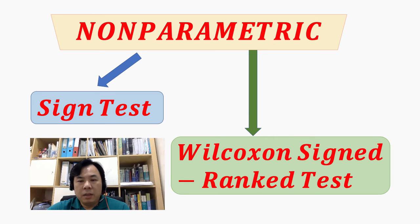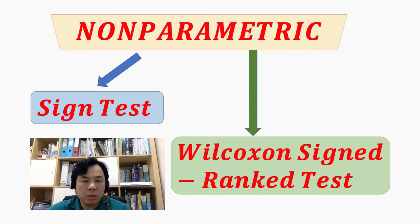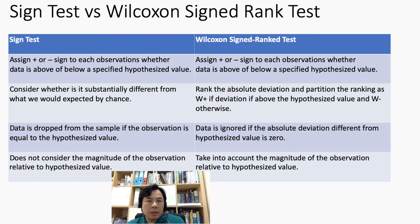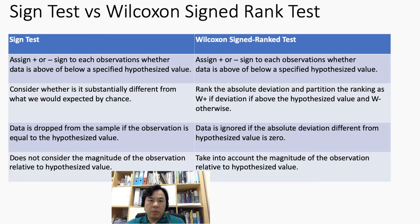Let's look at the procedures for both the sign test and the Wilcoxon signed rank test, and briefly show the differences between them. One similarity between the sign test and Wilcoxon signed rank test is that both assign positive and negative signs to each data observation to indicate whether the data is above or below the hypothesized value — which usually refers to the median.